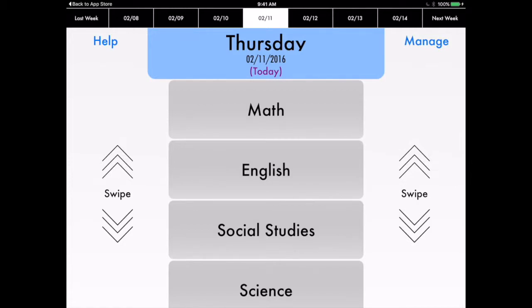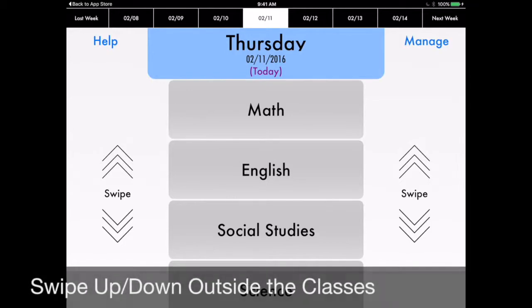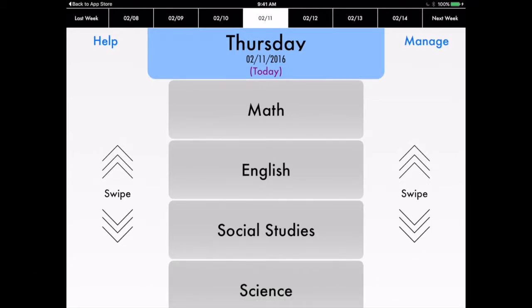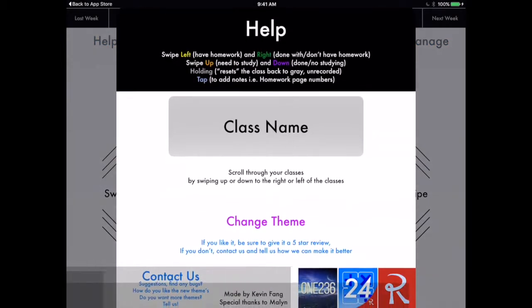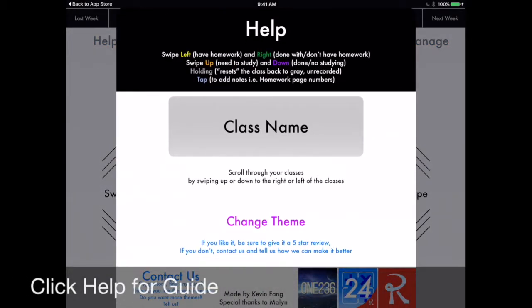Okay, now the functionality. The swiping on how this all works - to swipe up and down, you swipe on the left-hand and right-hand margins. You don't swipe on the classes. That has a different functionality. So when you're swiping on the classes, you click on the Help to give you a guide on what you do there.